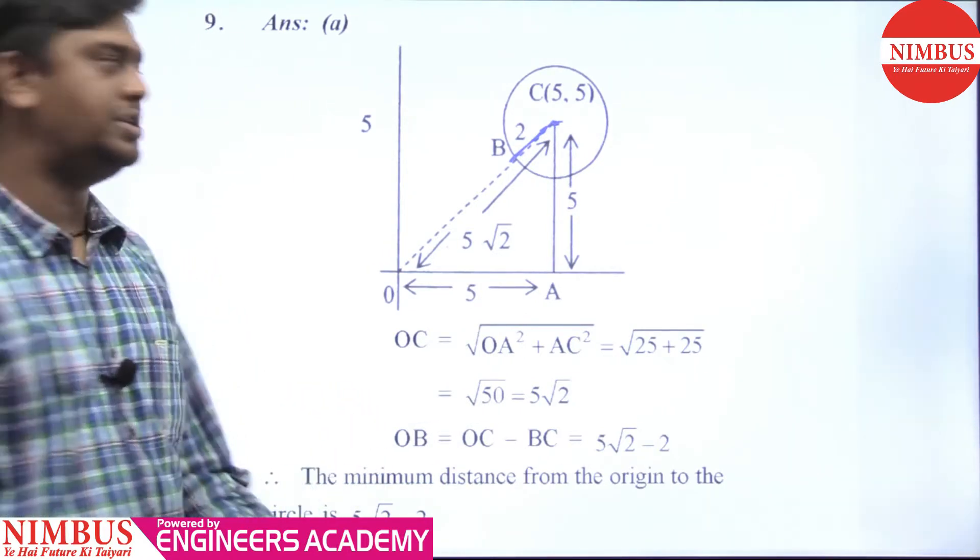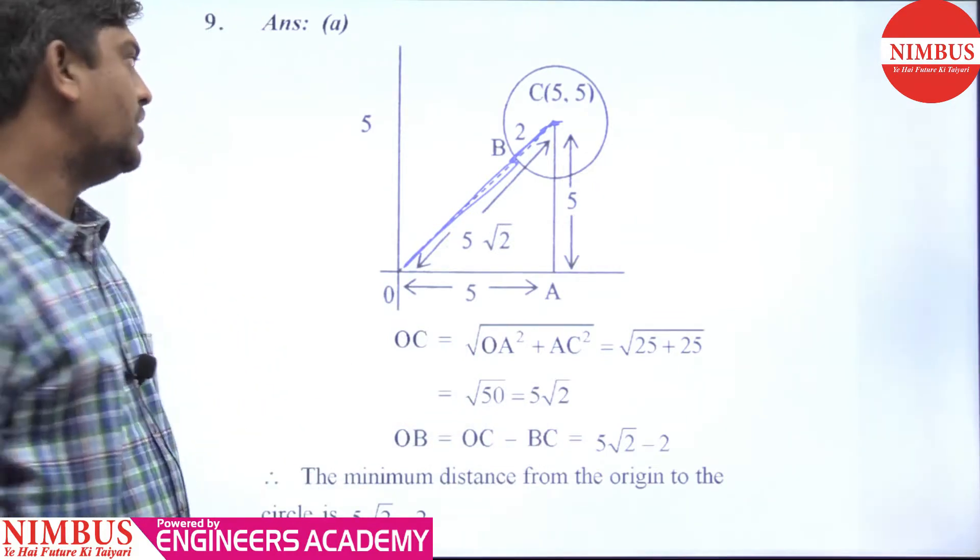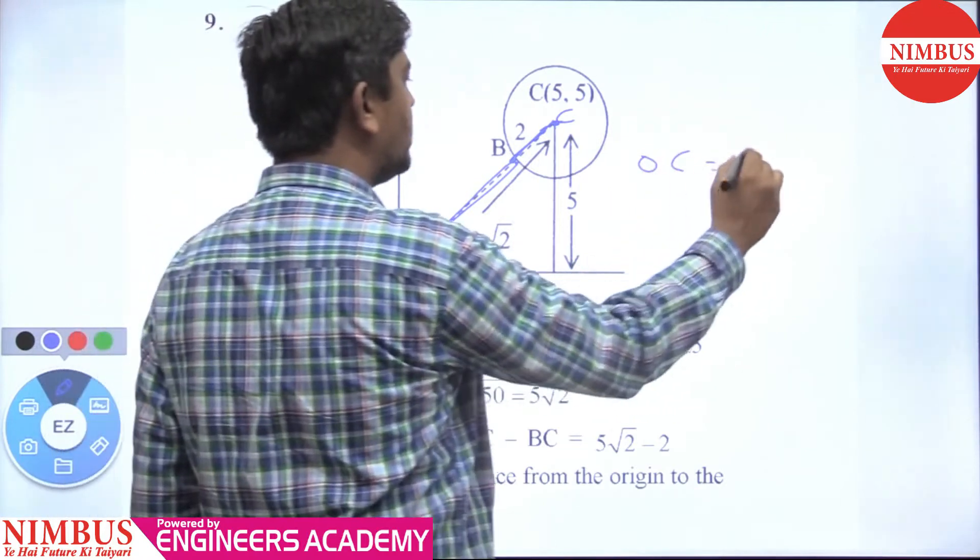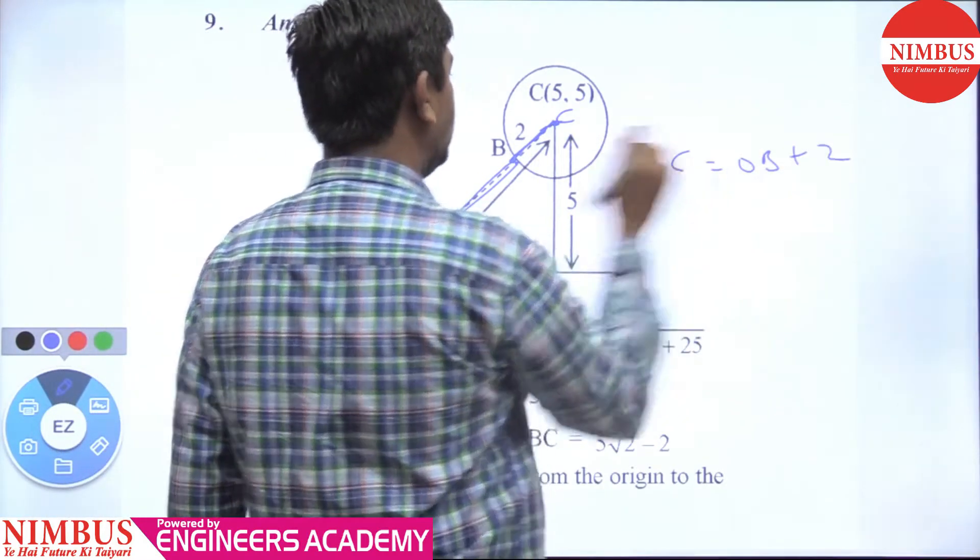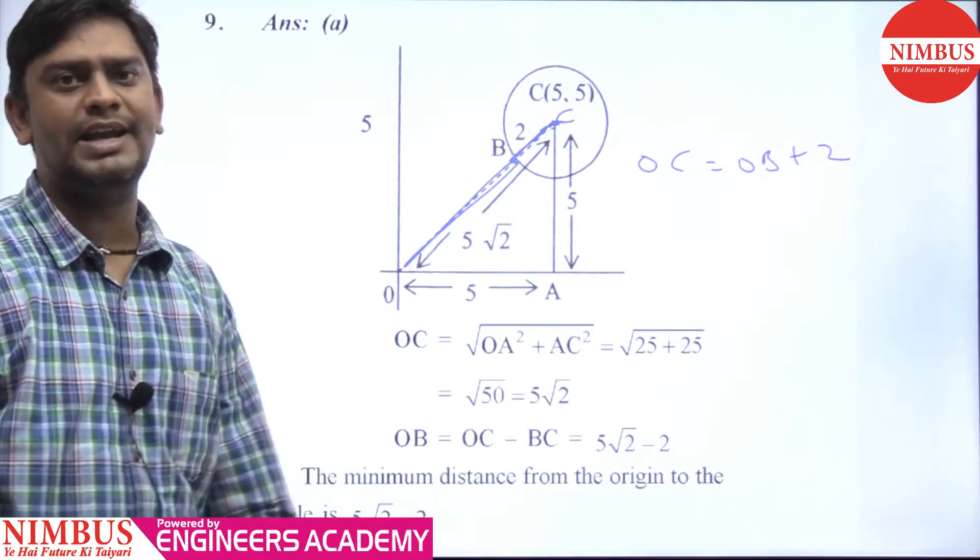Minimum distance is from the origin. I think the minimum distance is OB. This distance is 2. Let us say this point is C. This OC is OB plus 2. This distance is 2 and this is OB. This is the minimum distance.